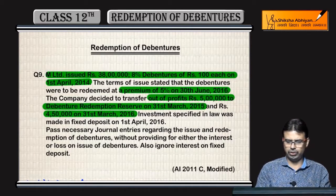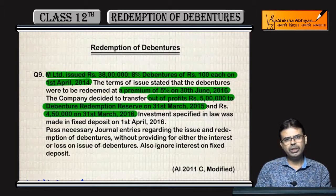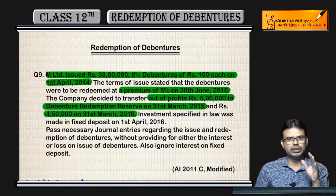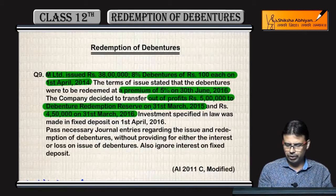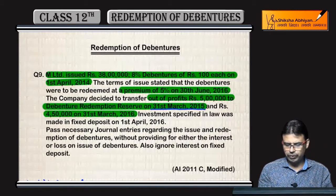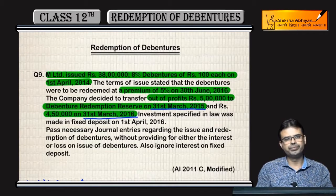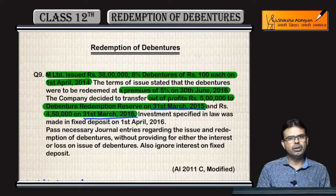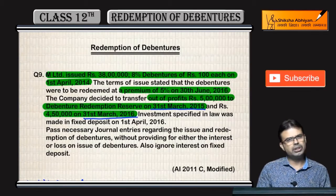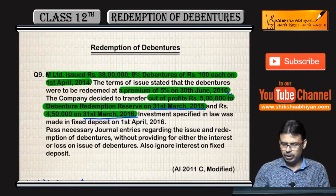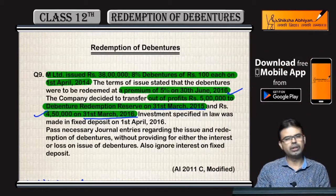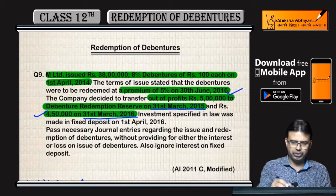The redemption is on 30th June 2016, so DRR must be completed before 30th June — and it has been done by 31st March 2015 and 31st March 2016. Secondly, 25% of ₹38 lakh is ₹9,50,000, which is the minimum required. ₹5 lakh plus ₹4,50,000 totals ₹9,50,000 — requirement fulfilled.